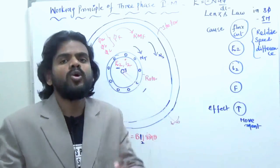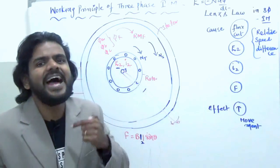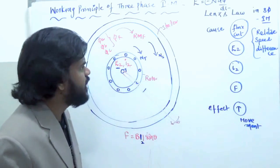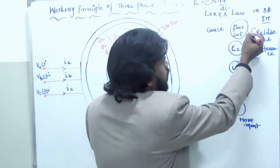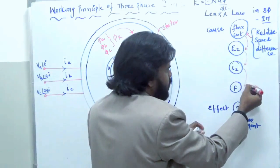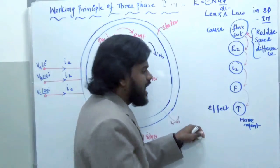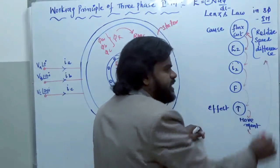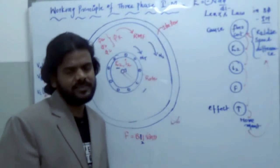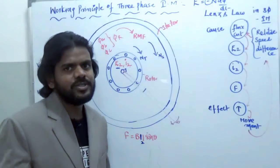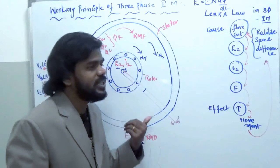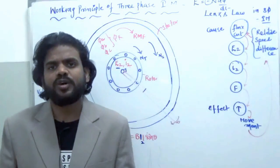That's the reason why the rotor rotates in the same direction as the stator. To summarize: relative speed difference is the reason for flux cut, flux cut is the reason for E2, E2 is the reason for I2, I2 is the reason for force, force is the reason for torque, torque is the reason for movement, and movement opposes the relative speed difference. So the rotor tries to run in the same direction as the stator and tries to catch it.